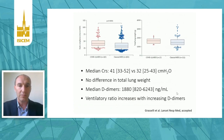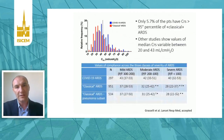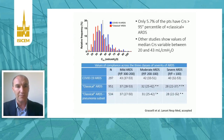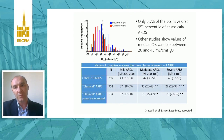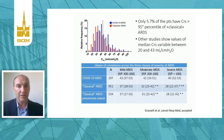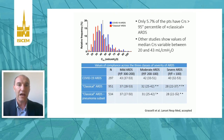The distribution of respiratory system compliance in both populations was unimodal. Even in COVID-19 we did not identify a bimodal distribution, as one would expect if there were two distinct phenotypes. The COVID-19 compliance distribution is unimodal and shifted toward higher values, but most values are superimposed. Only 5% of COVID-19 patients had compliance values higher than the 95th percentile of classical ARDS.